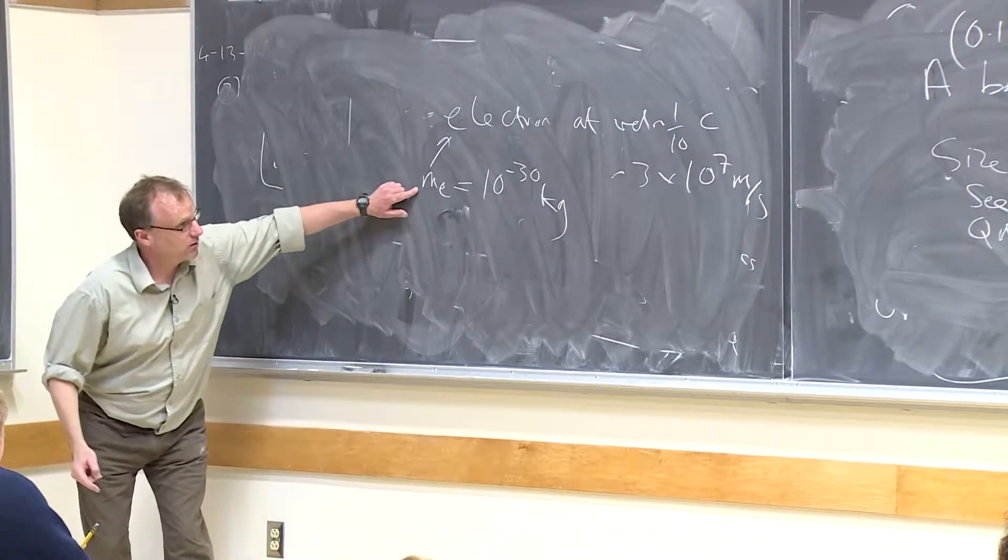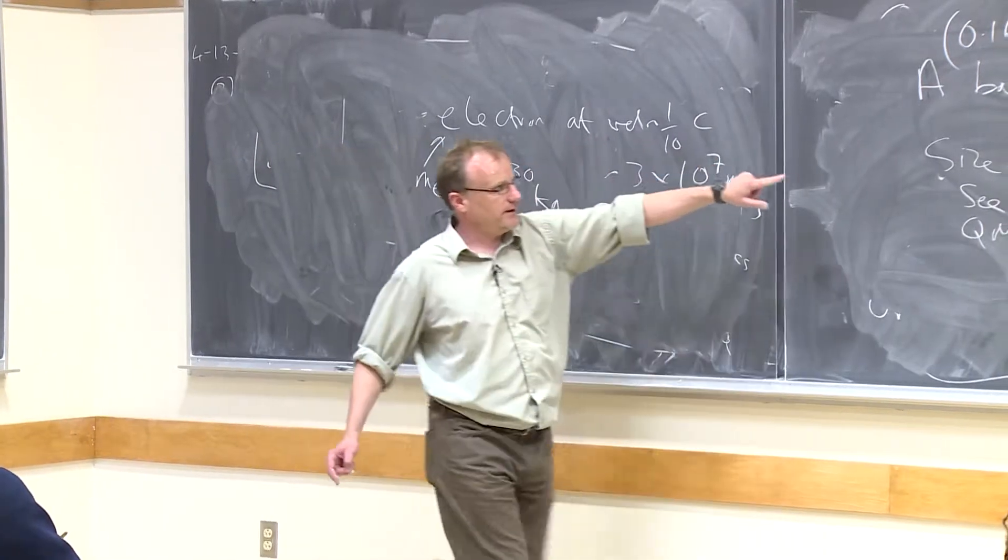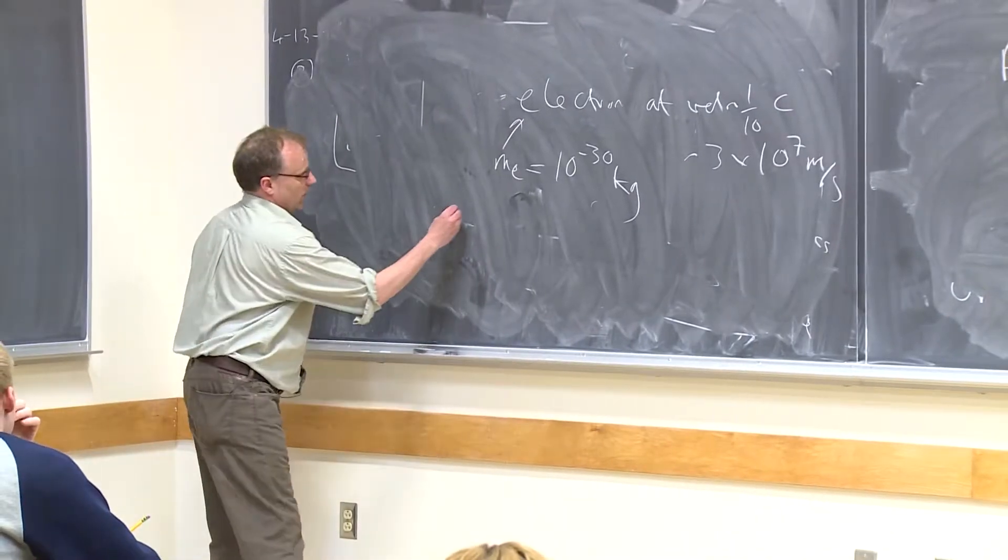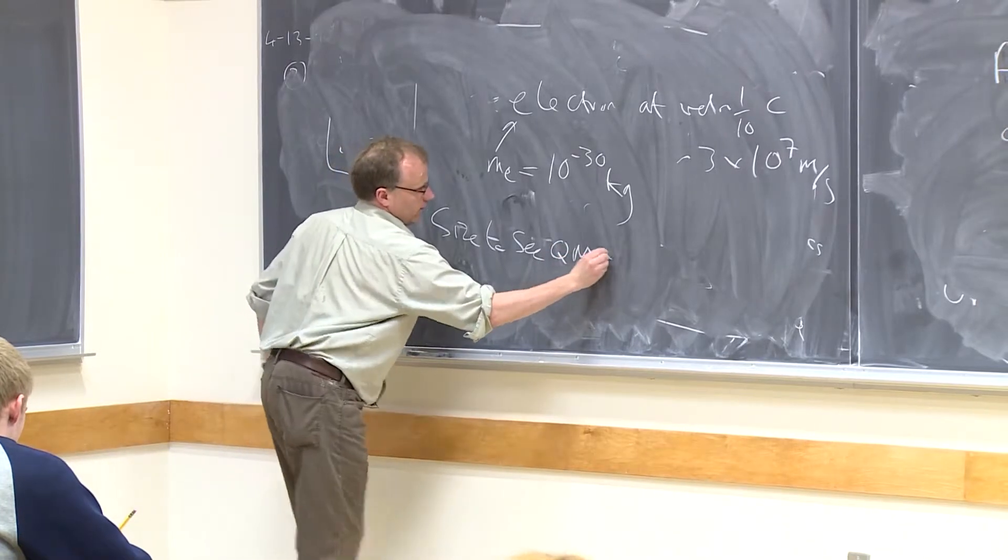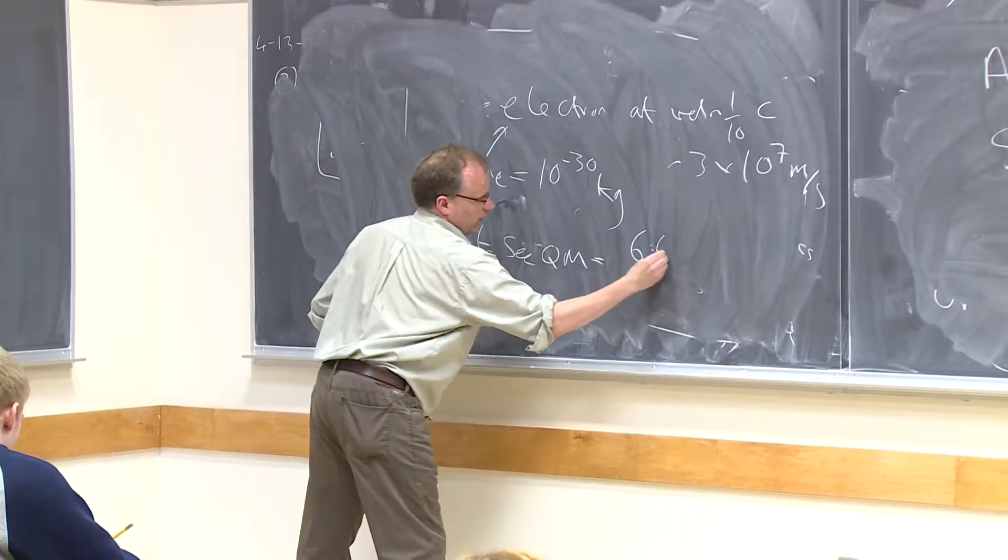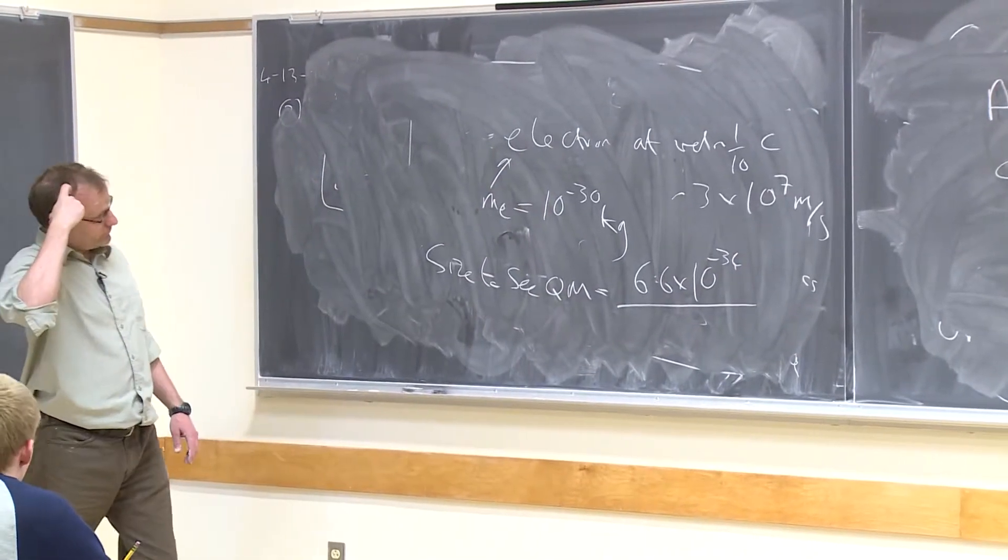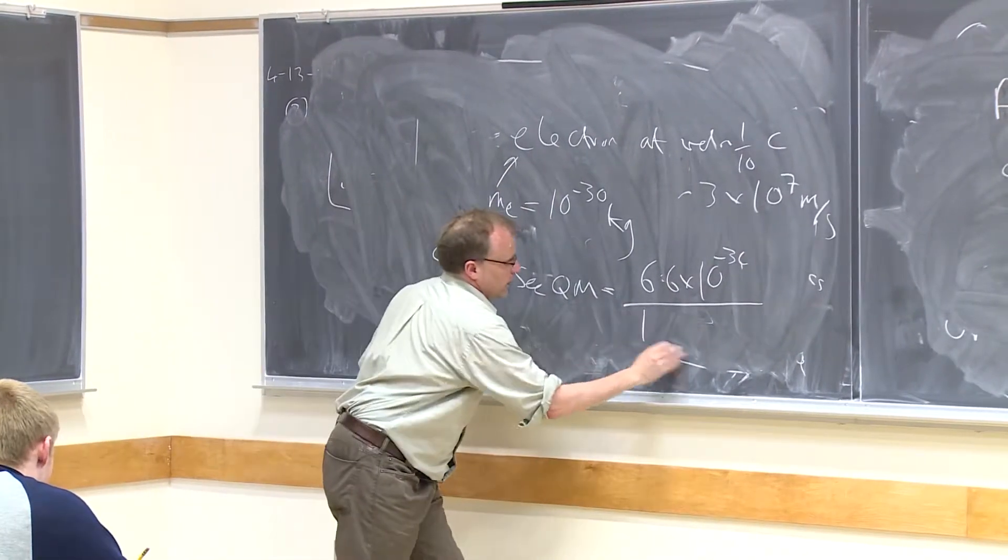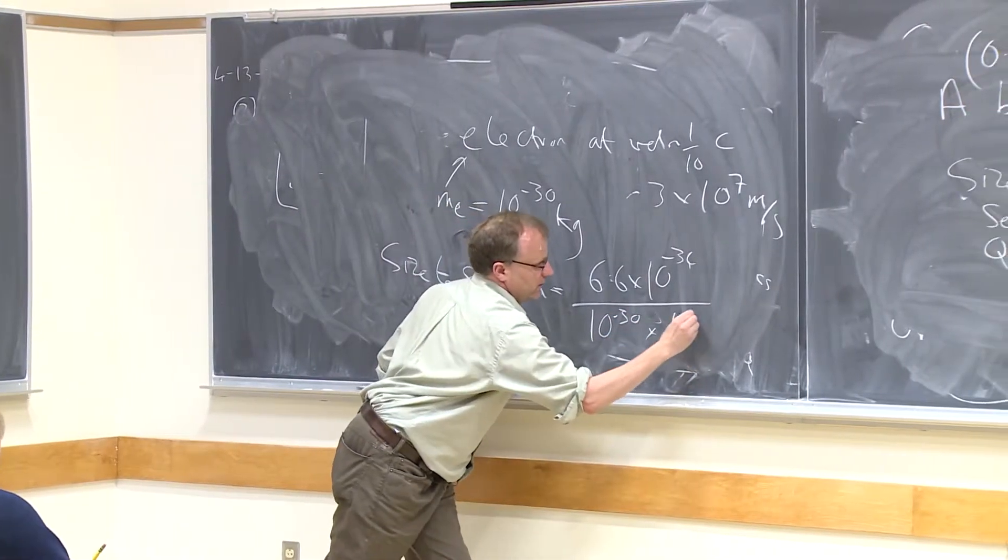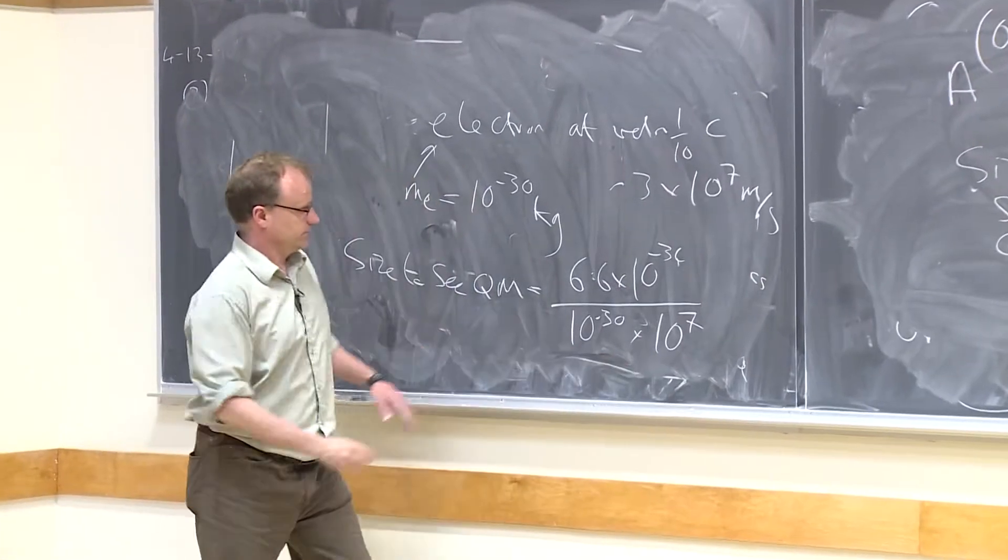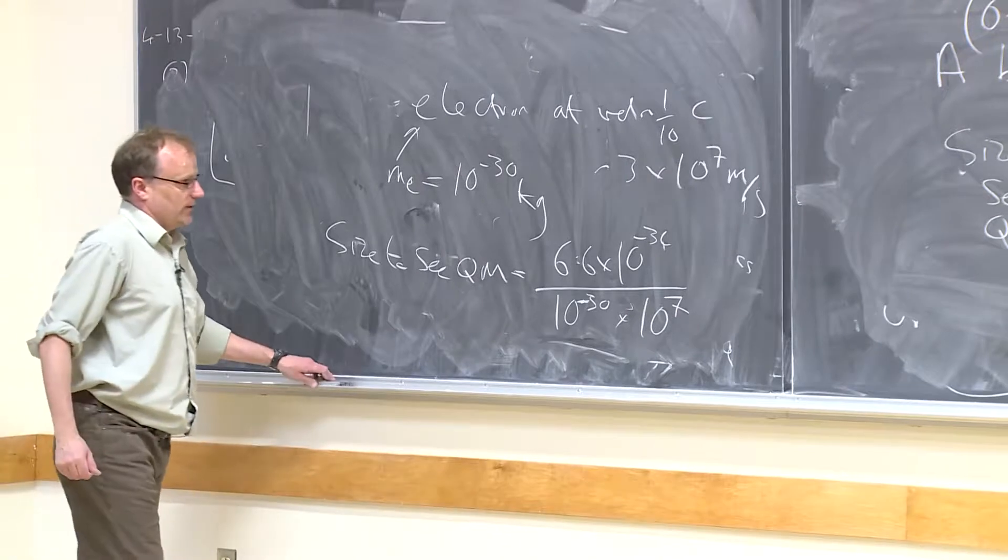So if we take that mass and that velocity and plug it into here, let's see what we get. So now we get size to see quantum mechanics is equal to 6.6 times by 10 to the minus 34 divided by 10 to the minus 30 multiplied by 10 to the 7 roughly. Which gives us something like 10 to the minus 11.